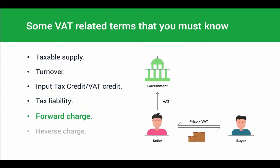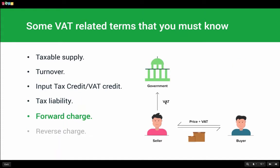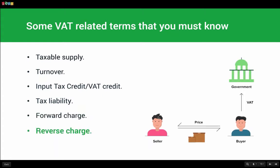Any transaction is classified as either a forward charge or a reverse charge transaction, based on who pays the VAT directly to the government. In a forward charge mechanism, a seller sells goods to a buyer, the buyer pays the price plus the VAT, and then the seller collects that VAT and pays it to the government when filing VAT returns. The only criteria for a forward charge transaction is that the seller must be a registered taxpayer.